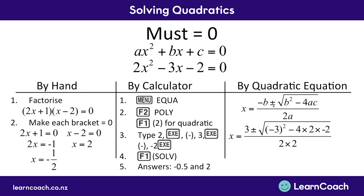So instead of b, we put negative 3. Negative b at the top would be negative negative 3, or just 3. We still have the plus or minus there. Then we have the square root of b squared — b is just negative 3 — so instead of b squared we have negative 3 squared. Then we have minus 4 times a, which is 2, multiplied by c, which is negative 2. So putting it all together: negative 3 squared minus 4 times a times c, all divided by 2 times a — remember a is 2.